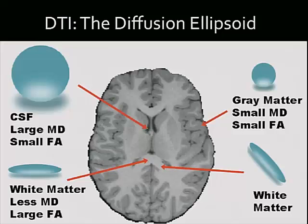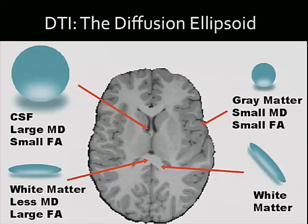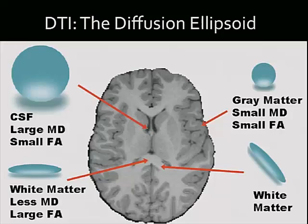In gray matter, you have small mean diffusivity and small FA — you don't have structure there. The water molecule disperses equally in all directions, but with a smaller amount of diffusion. In white matter, such as the corpus callosum, you have high FA because the water molecule is constrained in its diffusivity, but less mean diffusivity. The FA value is high there because white matter pathways constrain water motility. Other white matter tracts also have similar FA and diffusivity, but in different directions, which the eigenvectors from the analysis tell you.